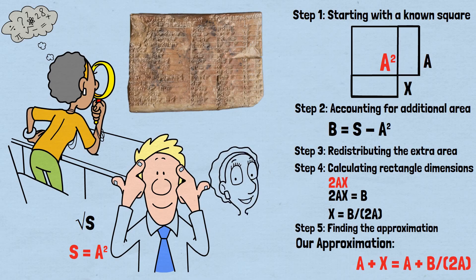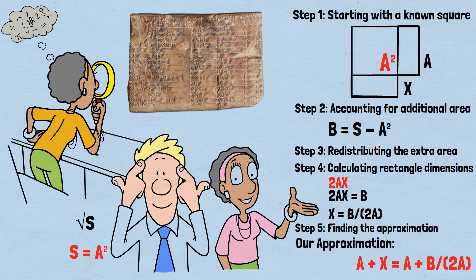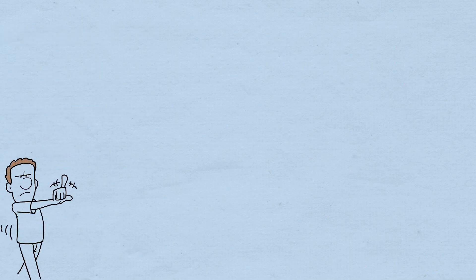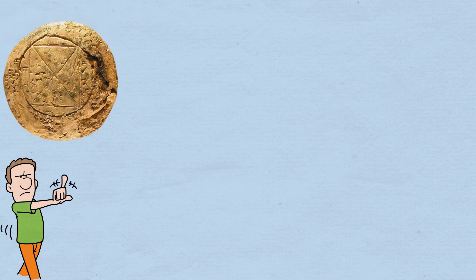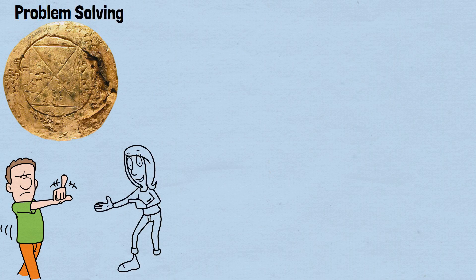This geometric approach shows why the method works — it's redistributing area in a way that maintains the fundamental relationship between a square's area and its side length. The square root algorithm wasn't developed in isolation. It was part of a sophisticated mathematical framework that the Babylonians used for practical problem solving.